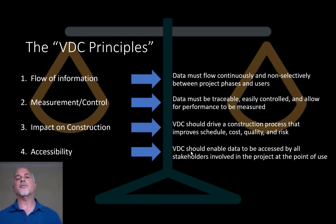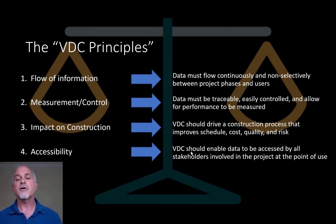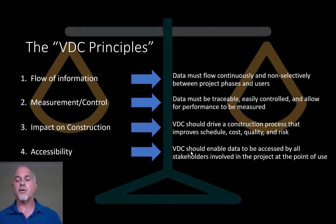The fourth and final principle is all about accessibility. What that means is that the data should be democratized and easily accessed by all the stakeholders and consumers of the data — which means owners should be able to have access to the data, the subcontractors, design engineer, and general contractor. This needs to be a transparent process to maximize the value of the data and the overall benefit of VDC to the project and to the owner.